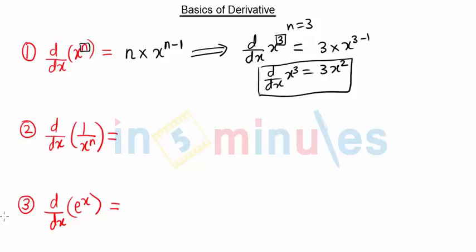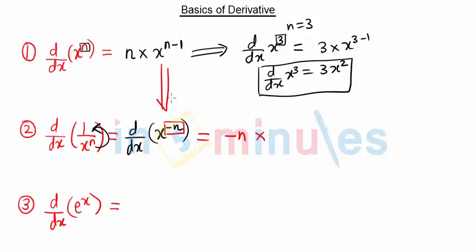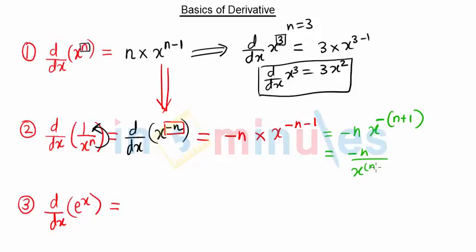Next, the derivative of 1 upon x raised to n. We can rewrite this as d/dx of x raised to minus n, since when it moves to the numerator the power becomes negative. So the constant is minus n; we multiply by that and subtract 1 from the power, giving x raised to minus n minus 1. Simplifying, this becomes minus n upon x raised to n plus 1.